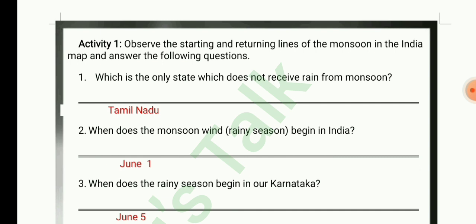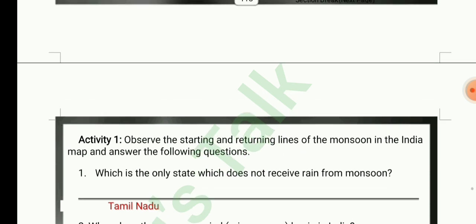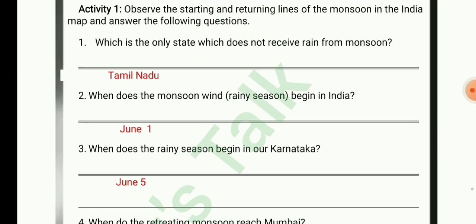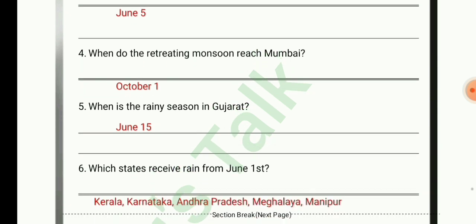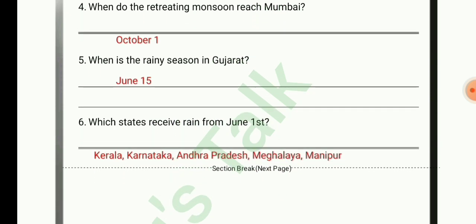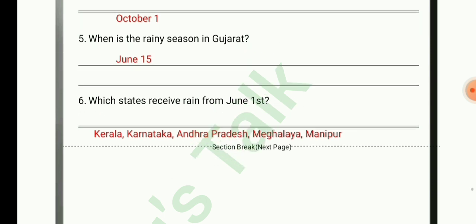Observe the starting and returning lines of the monsoon in the India map and answer the following questions. Which is the only state that does not receive rain from monsoon? Tamil Nadu. When does the monsoon wind begin in India? June 1st. When does the rainy season begin in Karnataka? June 5th. When does the retreating monsoon reach Mumbai? October 1st. When is the rainy season in Gujarat? June 15th. Which states receive rain from June 1st? Kerala, Karnataka, Andhra Pradesh, Meghalaya, and Manipur.